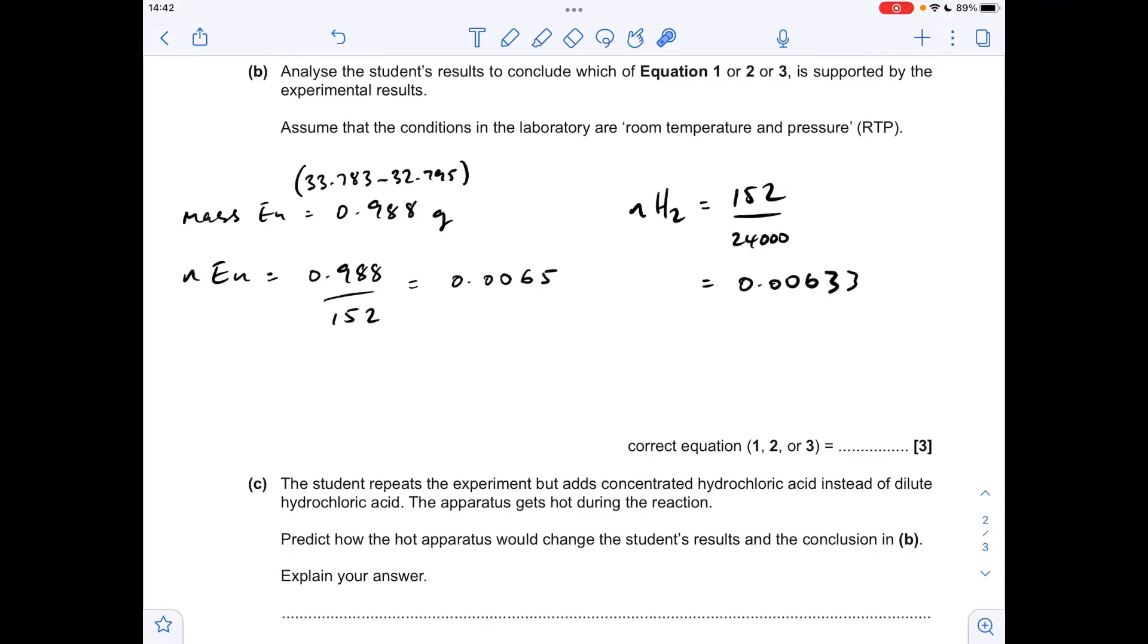So you can see these are very close together so we're going to assume that's approximately a one to one ratio which means that equation two is the correct equation.